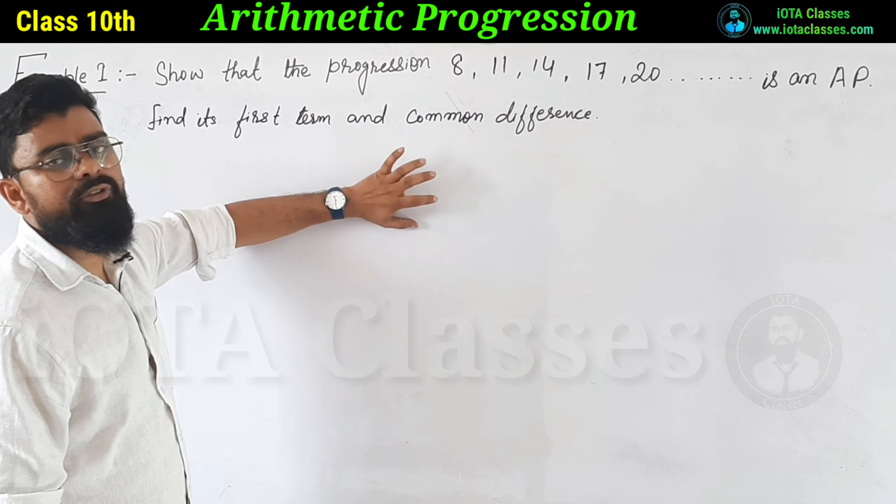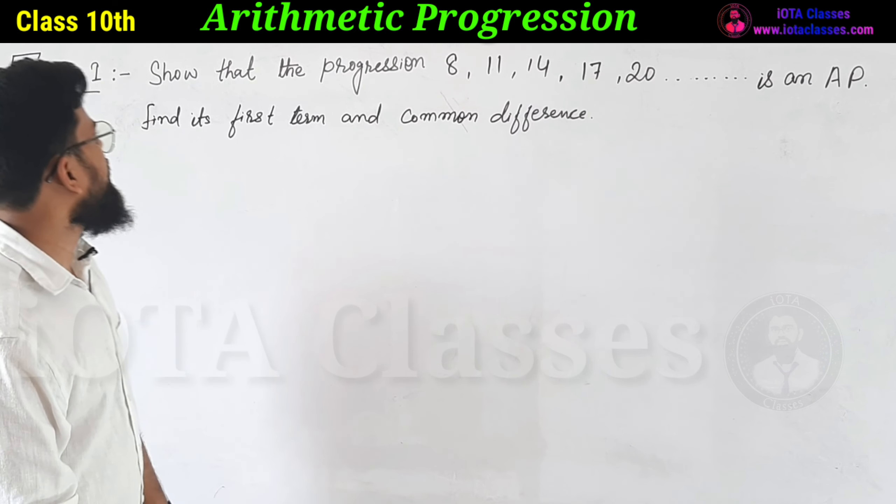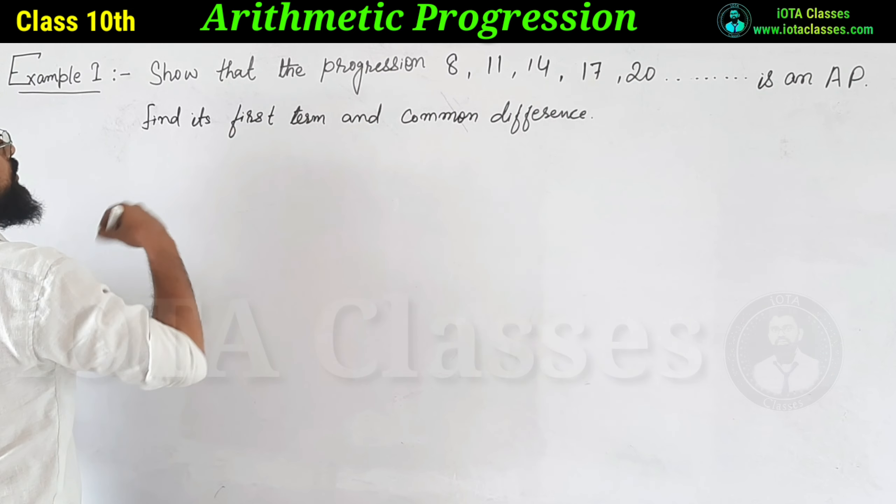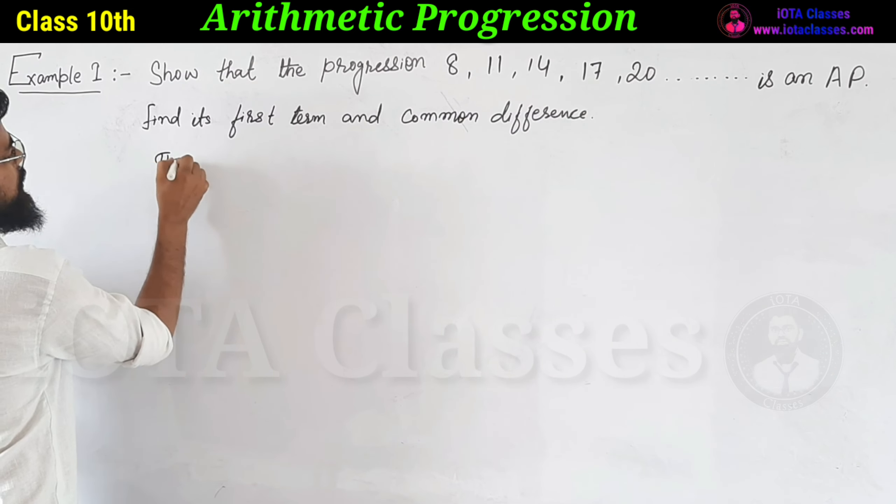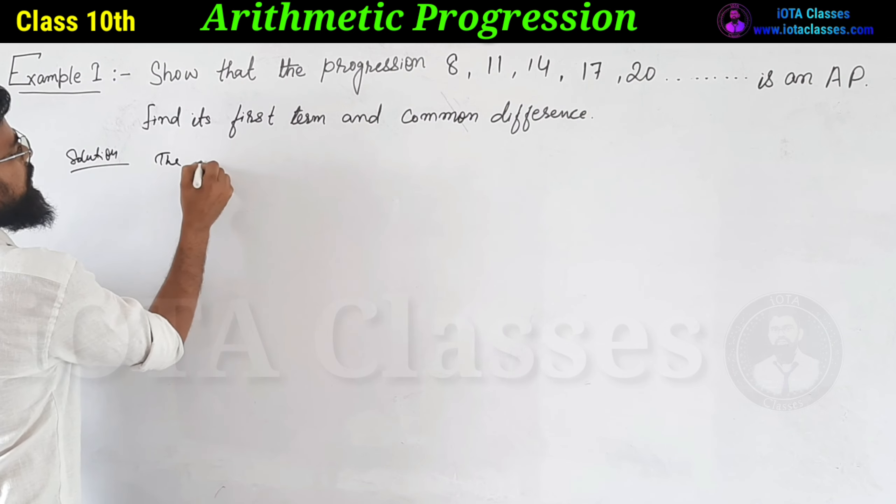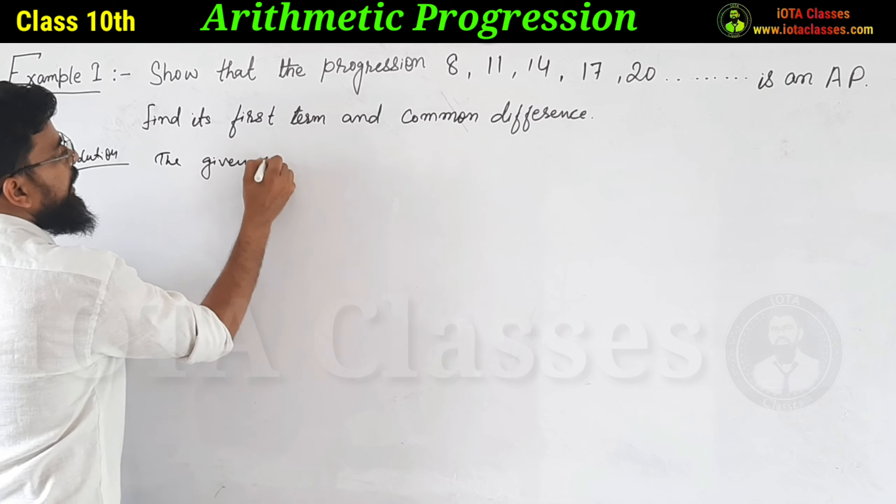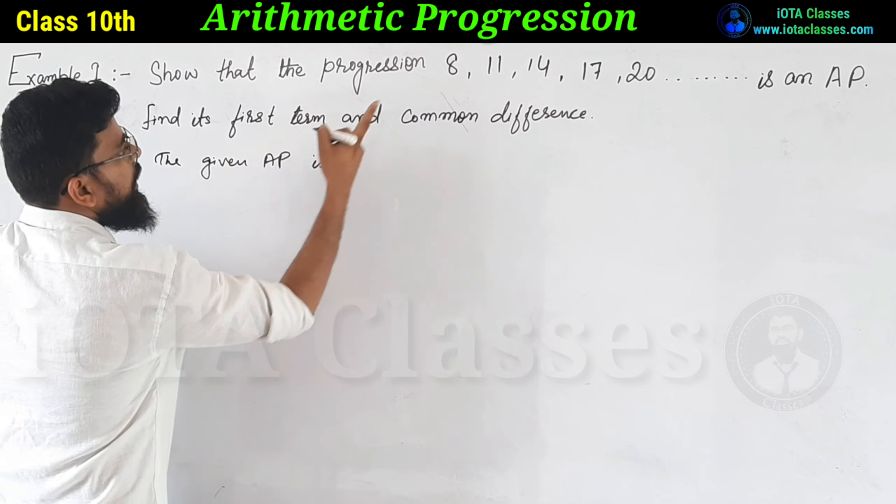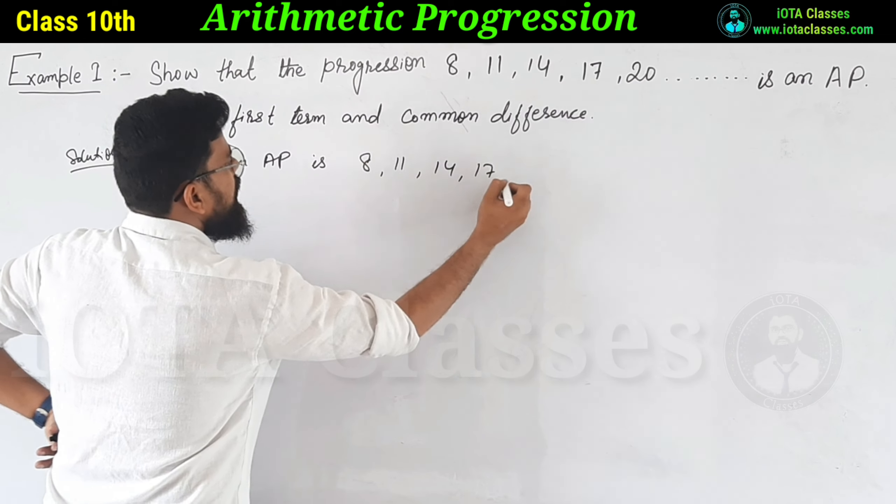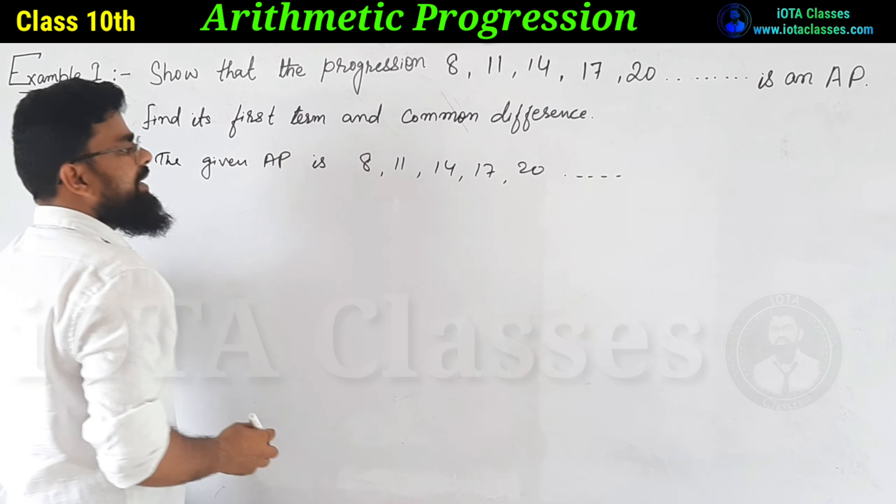That we have to find out. So what do we do, dear students? What is AP? The given AP is 8, 11, 14, 17, 20 and so on. So this is the solution.